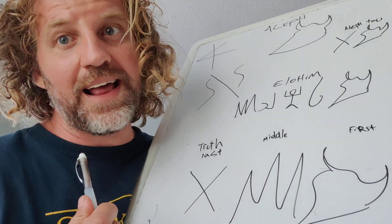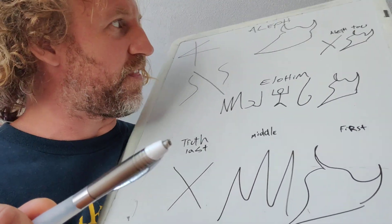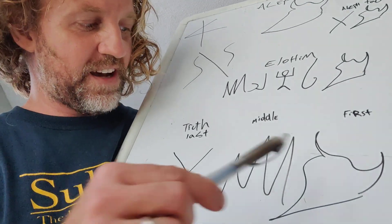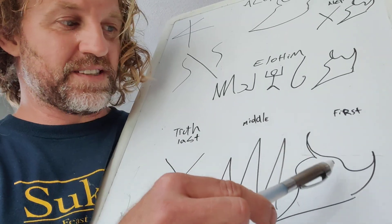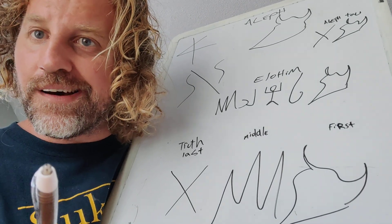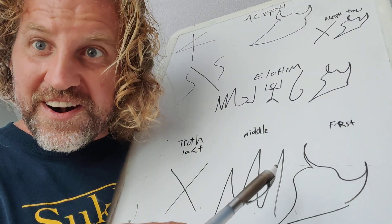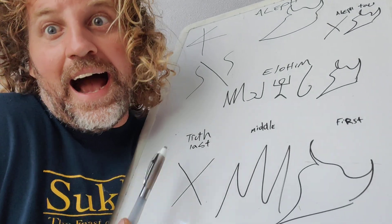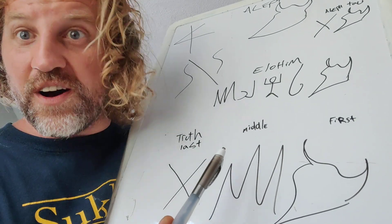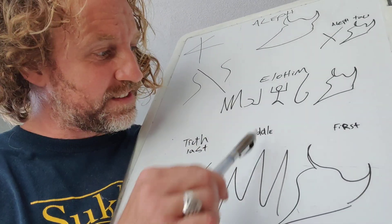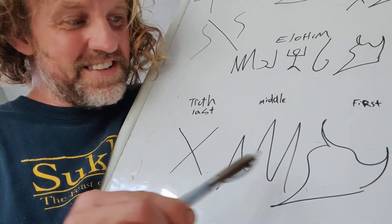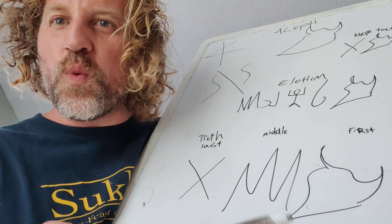Another word I love that begins with Aleph is 'Truth,' which is Aleph Mem Tav — Emet. Incredibly, Aleph is the first letter, and the Messiah said 'I am the Truth.' The first letter is Aleph, the middle letter of the Hebrew Aleph-Bet is Mem, and the last letter is Tav. So he is the Truth — he's the whole of the Word.